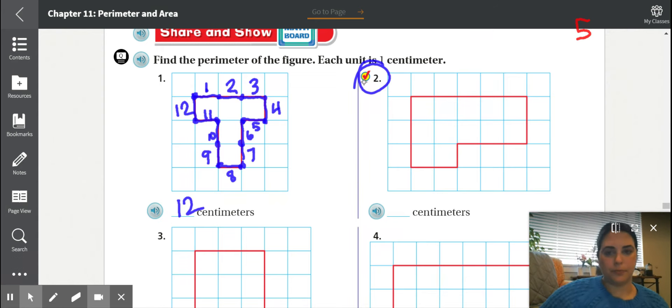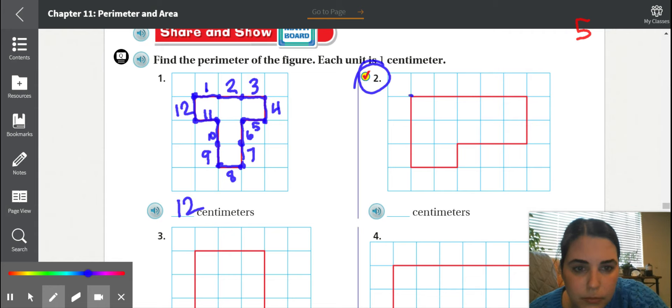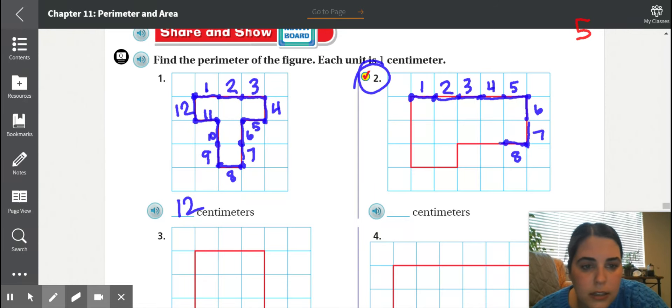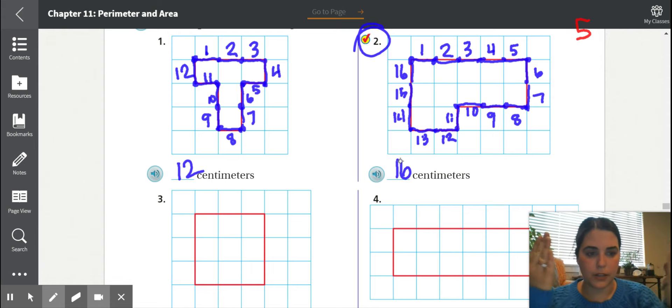Looking at number two, we're going to start here. That'll be number one. We're going to go from one to two. That's one, two, three, four, five, six, seven, eight, nine, 10, 11, 12, 13, 14, 15, and 16. So that would be 16 centimeters going around the perimeter.